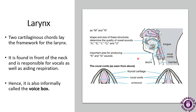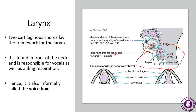Next is the larynx. As you can see, this part is called the larynx, and vocal cords are also displayed here. The larynx is also called the voice box. It is found in the front of the neck and is responsible for vocals as well as aiding respiration. Whenever food is swallowed, a flap called the epiglottis folds over the top of the windpipe and prevents food from entering the larynx.